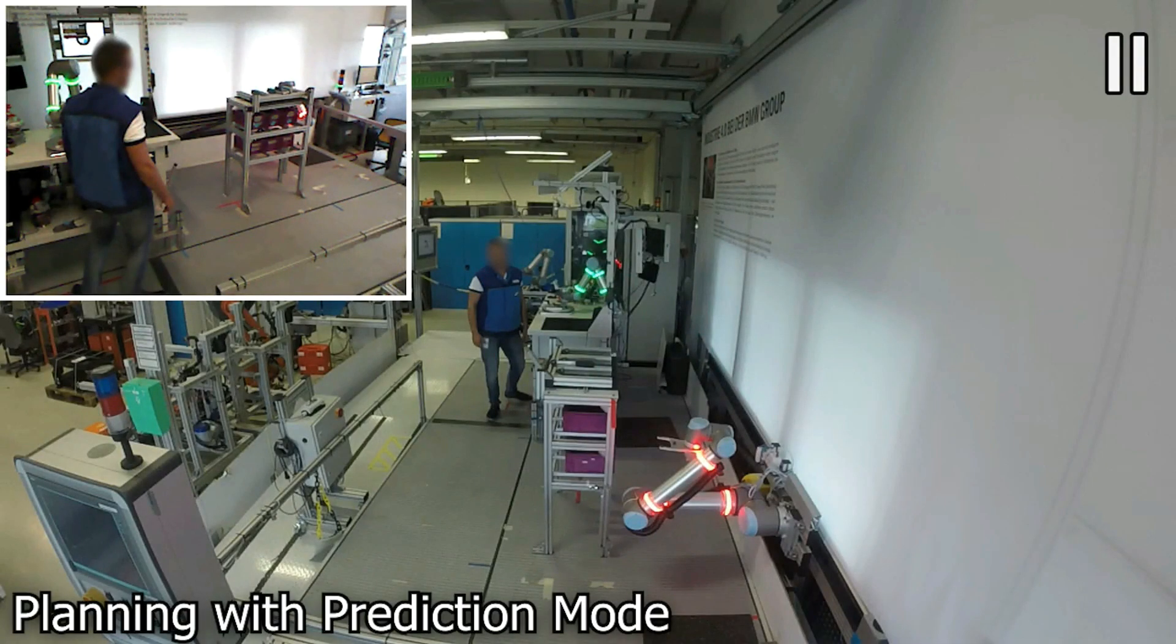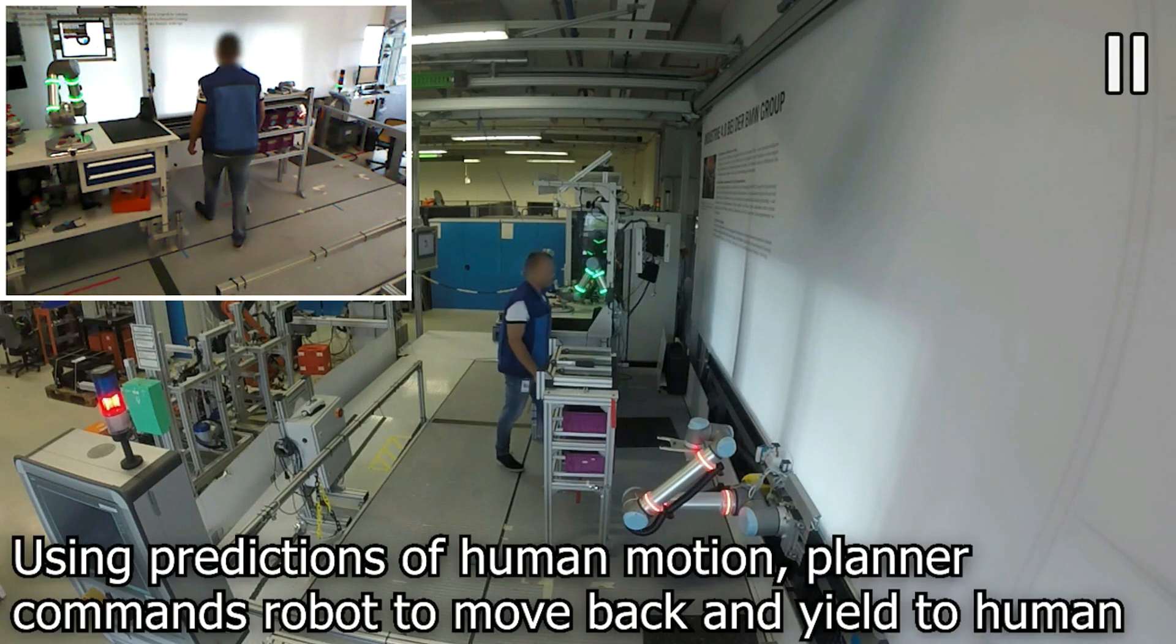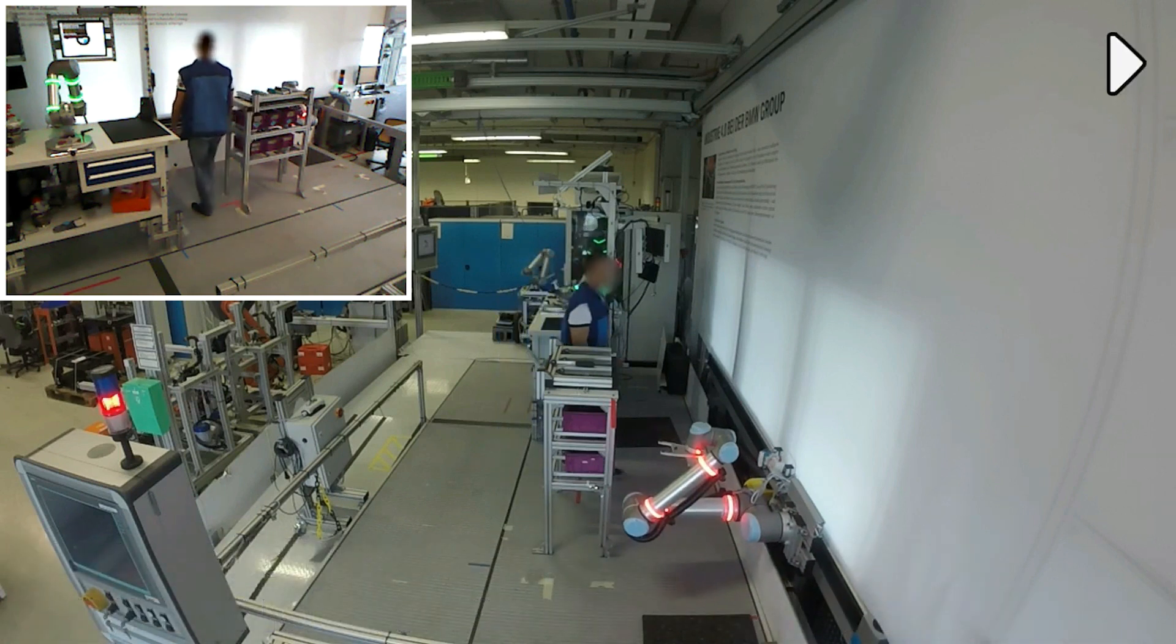Next, we examine the same scenario but using our approach of combining prediction with planning in time. Here, as we receive predictions that the human will approach the depot, the planner commands the robot to make way for the human.